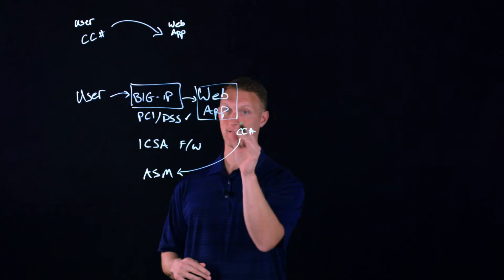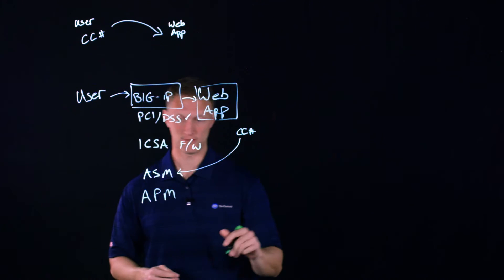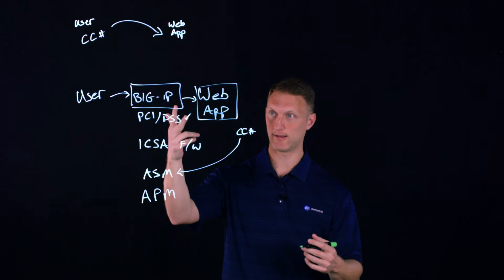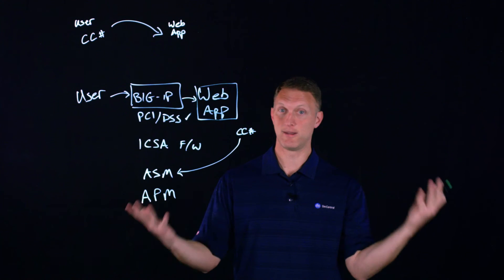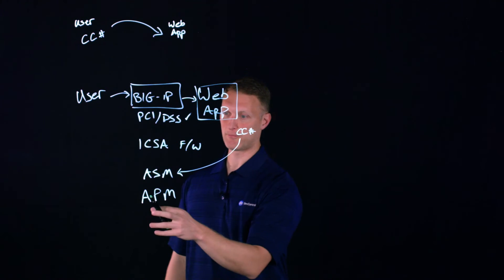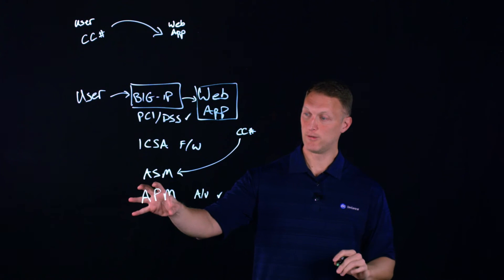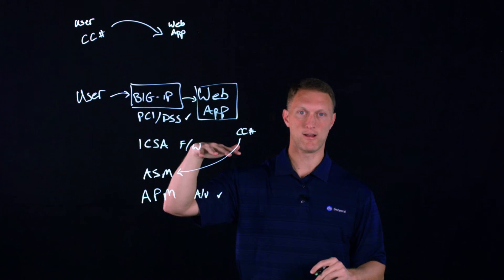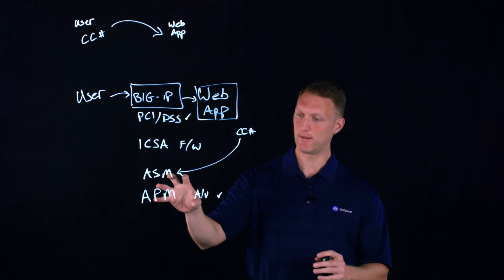Also, protecting the card data is making sure that only valid users come in and I'm going to put APM right here. Our access policy manager, and that thing will make sure that only valid users are able to come into your web application. And so the APM and the ASM do a lot to protect the card data. Another one is a vulnerability management program. And so you need to make sure you got this vulnerability management program in place to secure all your data and the transactions and stuff. One cool thing that the APM does is that as a user comes through the big IP to request access to your web application, I'm going to put a V check right there.